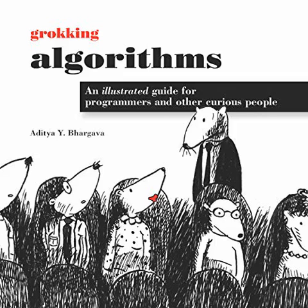Chapter 3: Recursion. In this chapter, you learn about recursion — a coding technique used in many algorithms and a building block for understanding later chapters in this book. You learn how to break a problem down into a base case and a recursive case. The Divide and Conquer Strategy, Chapter 4, uses this simple concept to solve hard problems.